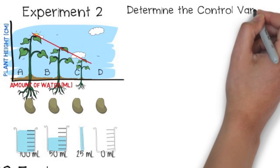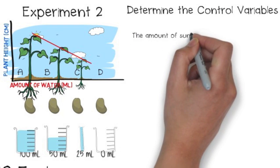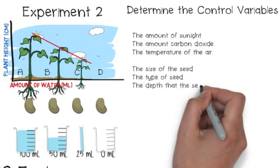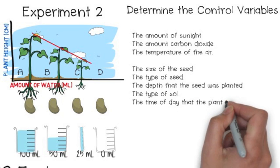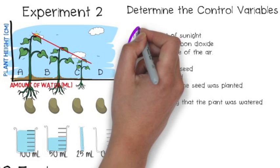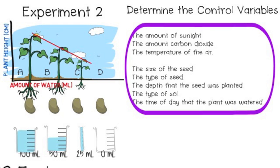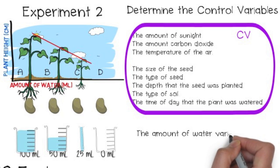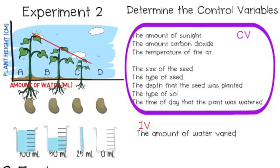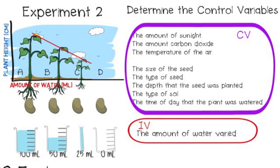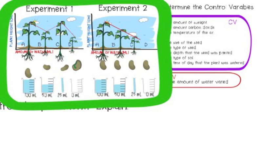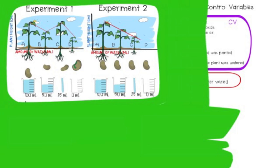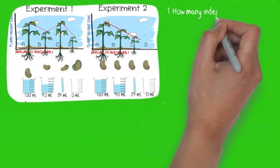My control variables are the amount of sunlight, the carbon dioxide, the temperature in the air, the size of the seed, the type of seed, the depth at which the seed was planted, the type of soil, and the time of day that the plant was watered. You don't figure out control variables after your experiment — you figure them out before. It's helpful to imagine the experiment so you can identify everything that might interfere with your independent variable, which is the amount of water. Your control variables cannot be your independent or dependent variable. There is only one independent variable — only one thing that's changed in a controlled experiment.